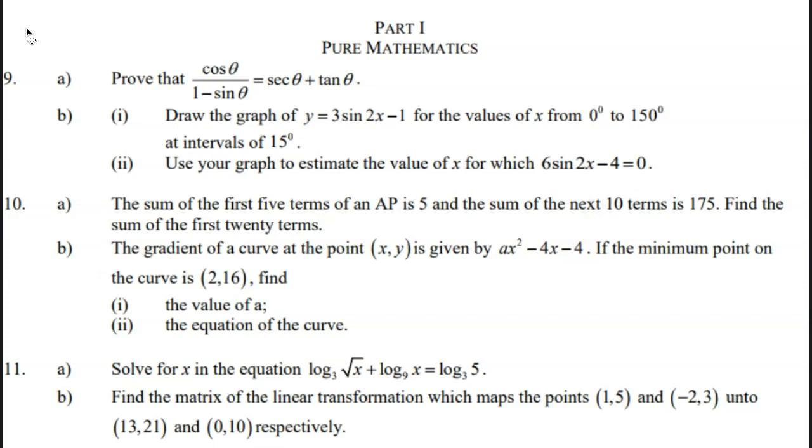Question 9. Part A: Prove that cos theta over 1 minus sin theta equals sec theta plus tan theta. Part B: Draw the graph of y equals 3 sin 2x minus 1 for values of x from 0 degrees to 150 degrees at intervals of 15. Use your graph to estimate the value of x for which 6 sin 2x minus 4 equals 0.